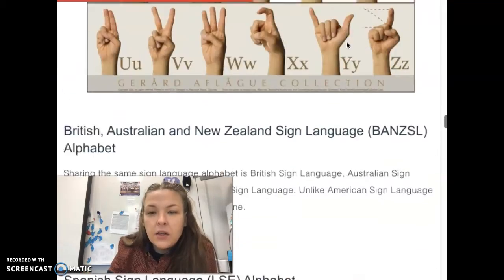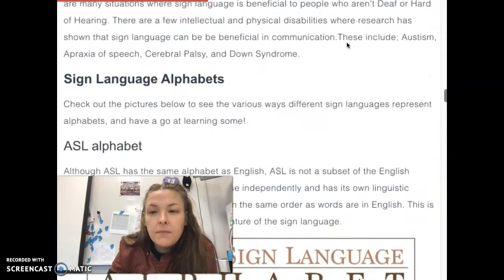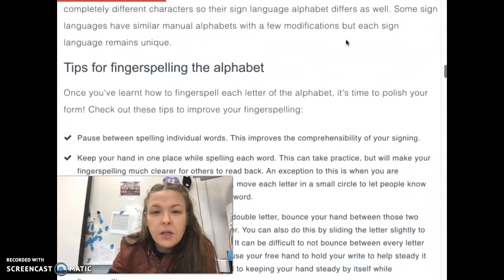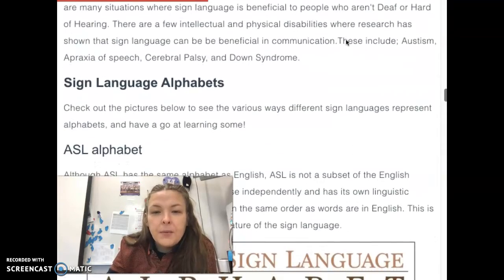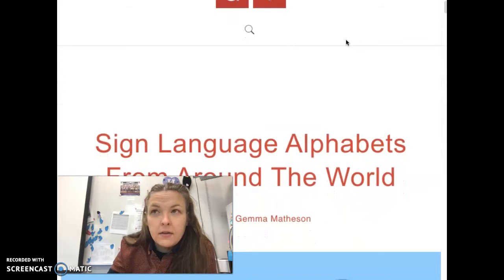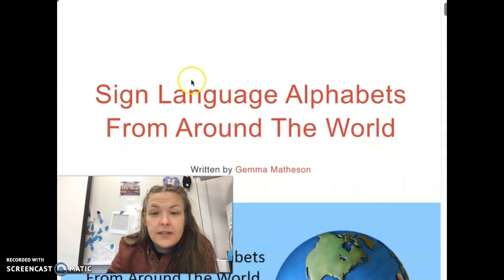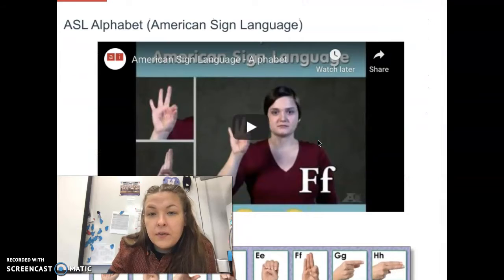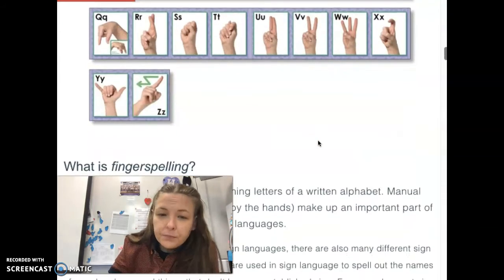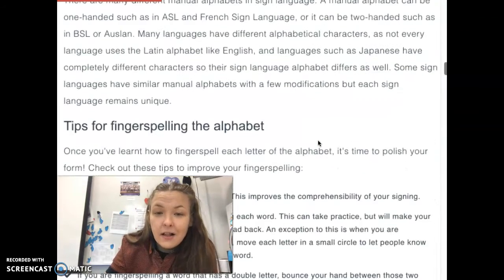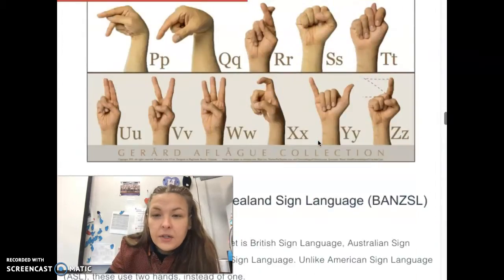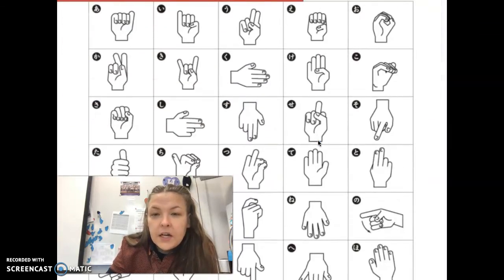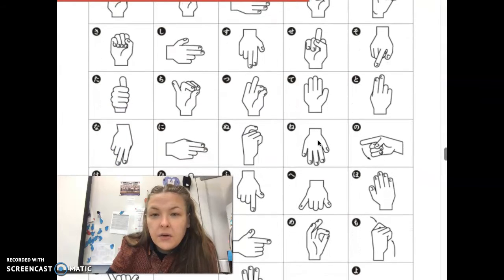So now I would like you to take a look at different fingerspelling alphabets from all around the world. You can read this if you'd like. It's really cool. When you click on the link, it's going to say sign languages from around the world. You can look at alphabets from around the world. Hopefully you already know the ABCs in ASL, but I would like you to take a look at these different fingerspellings here.